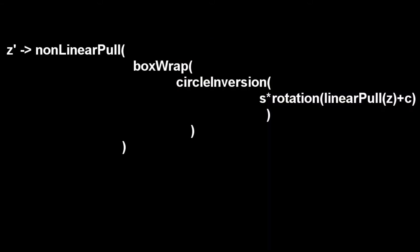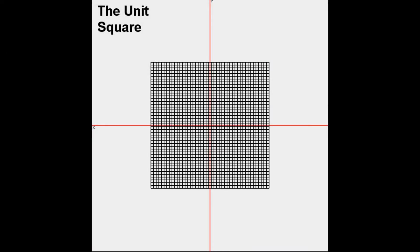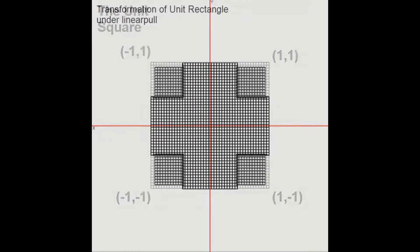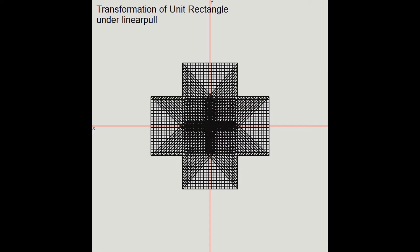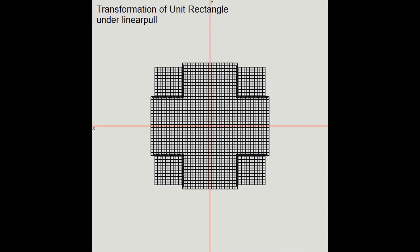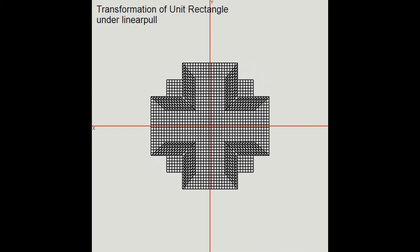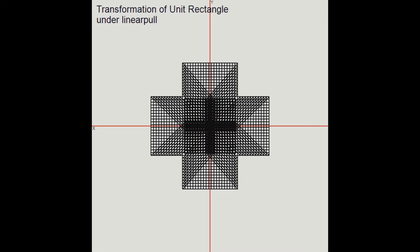So what happens? To get an understanding, we use a unit square. Every corner has the exact distance 1 to the x-axis and the y-axis. Now we are going to visualize how the transformation deforms the unit square. We start with the linear pull as the first transformation in the formula. All points outside a certain distance to both axes shift to the opposite quadrants by 1 on both axes. In this case we choose as critical distance to both axes one half.